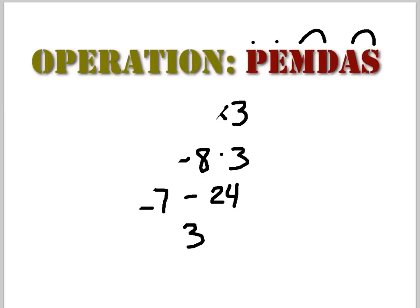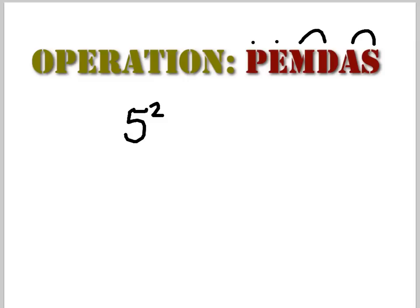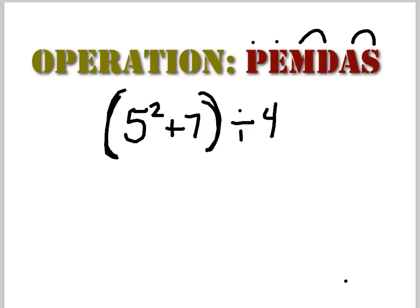Let me try to trick you on this one. We have (5 squared plus 7) divided by 4. Do we have parentheses? Yes. Inside the parentheses, we still follow the order of operations. 5 squared equals 25, and 25 plus 7 is 32. So now we have 32 divided by 4. The exponents were dealt with inside the parentheses. Now division: 32 divided by 4 equals 8.